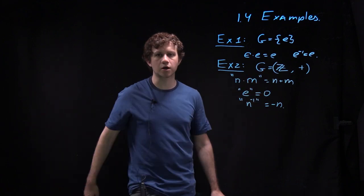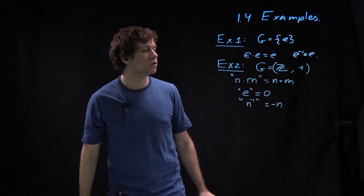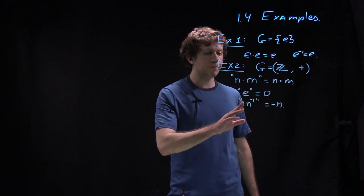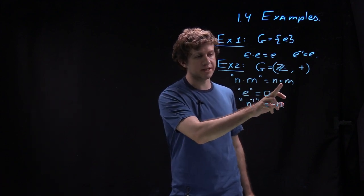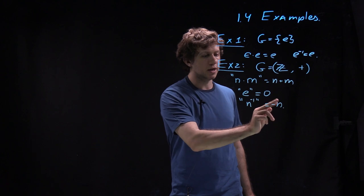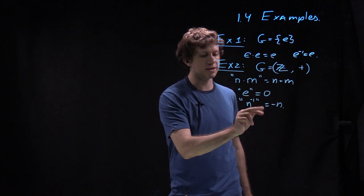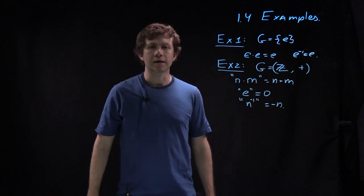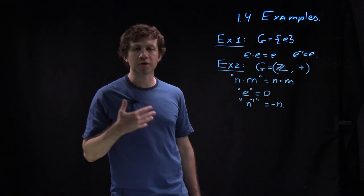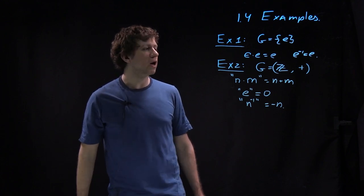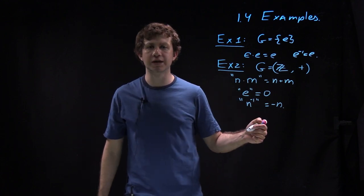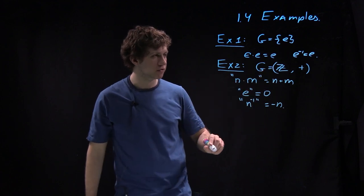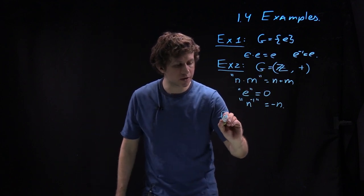So of course this is the usual integers, and all axioms are clear from properties you know. So this convention for writing sum instead of a product, zero instead of unit, and minus instead of power minus one, is very common in group theory, when you have a group where the order does not matter. And Z is one of those groups.